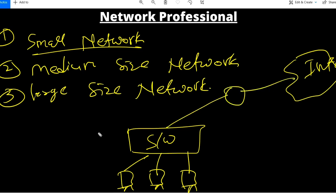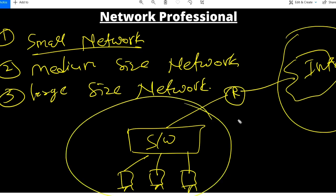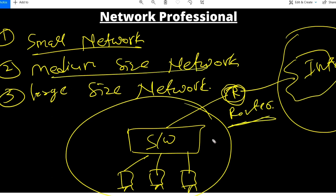For example, a switch connects some computers, and you need one router to connect your LAN network to the internet — users can then access the internet. Switch is a networking device used to connect multiple computers together, and router is a networking device used to connect multiple networks together. I'm using a router here because the ISP network and my LAN network are different networks.